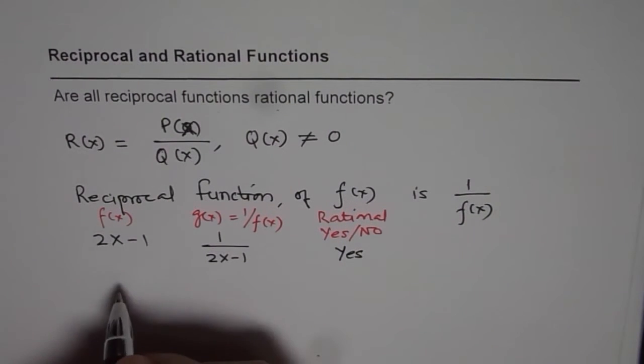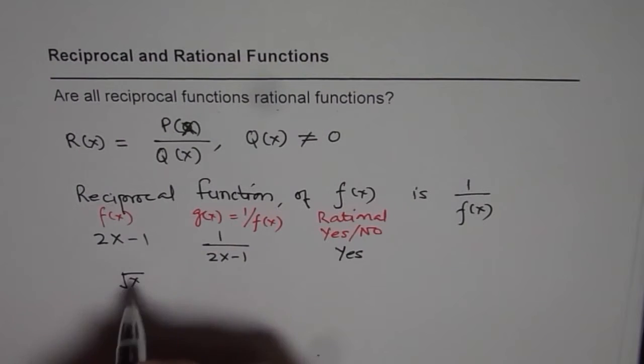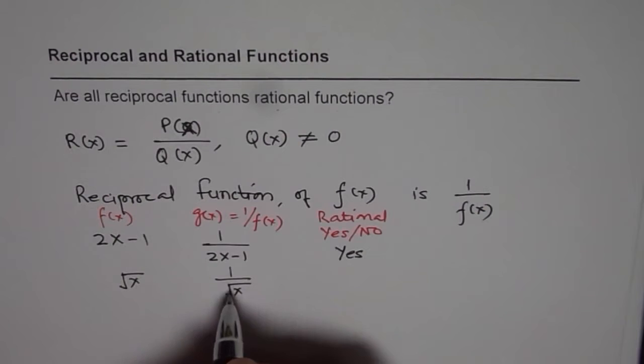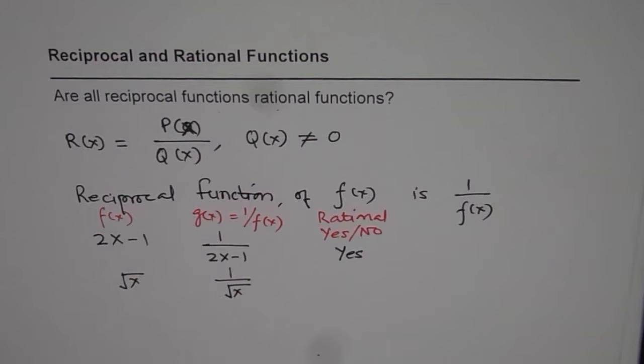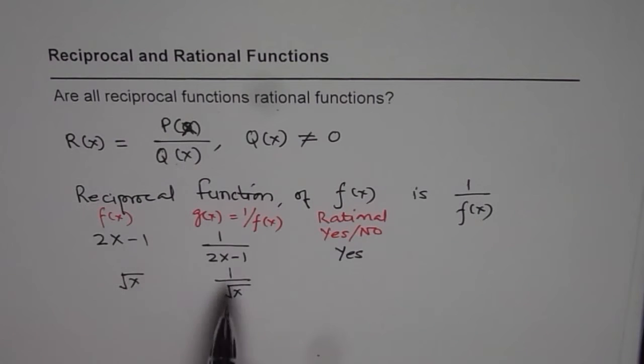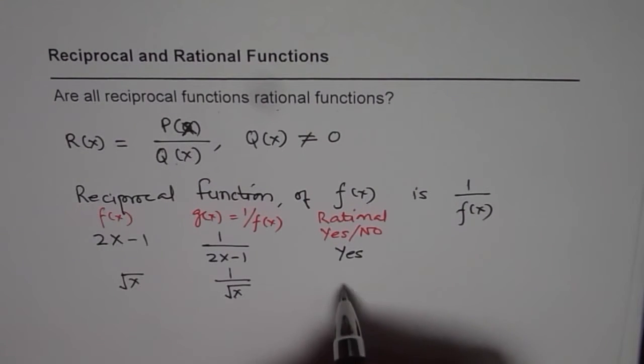Now how about square root of X? So if square root of X is my function, I will write 1 over square root of X. Now is that a rational function? Square root of X is not a polynomial. And therefore this is not a rational function.